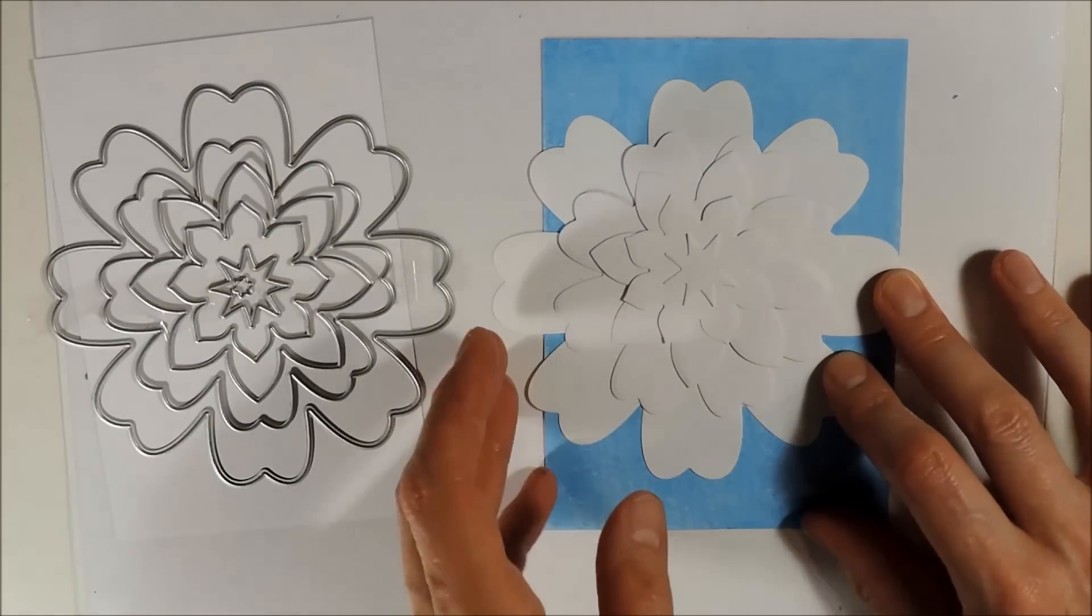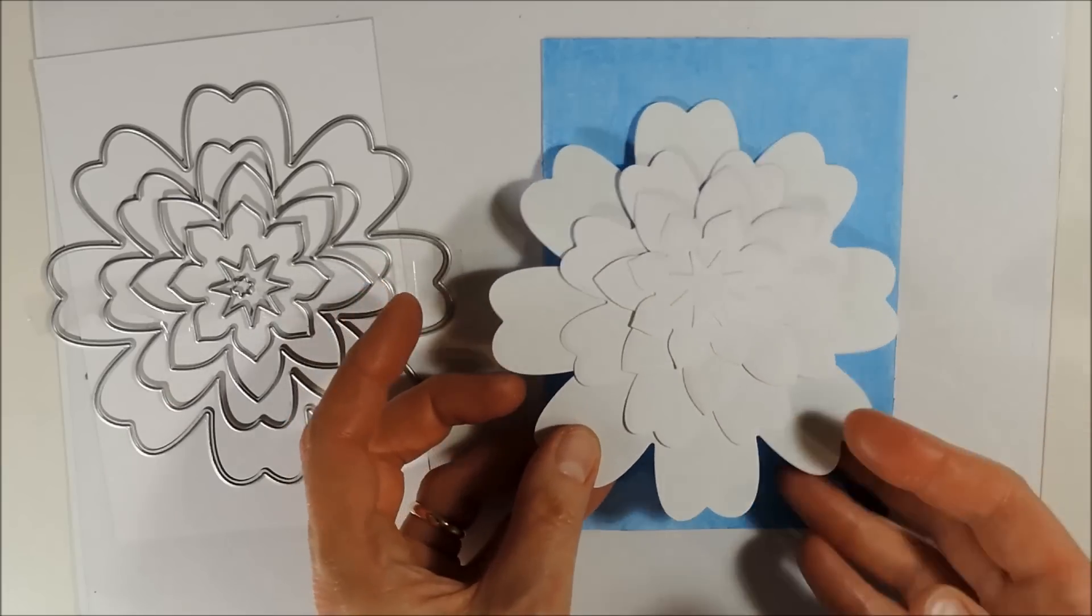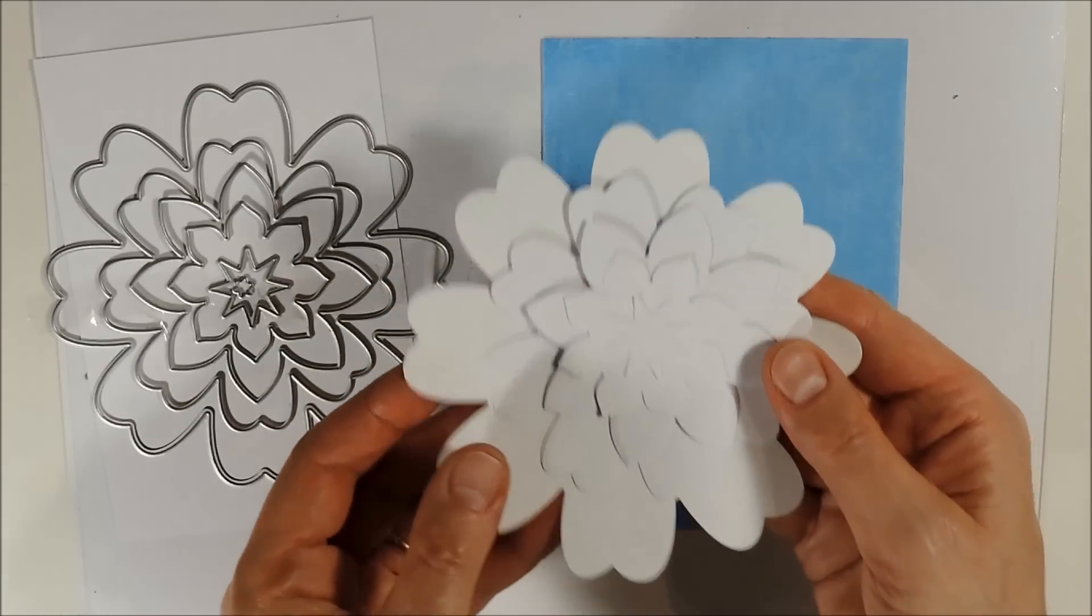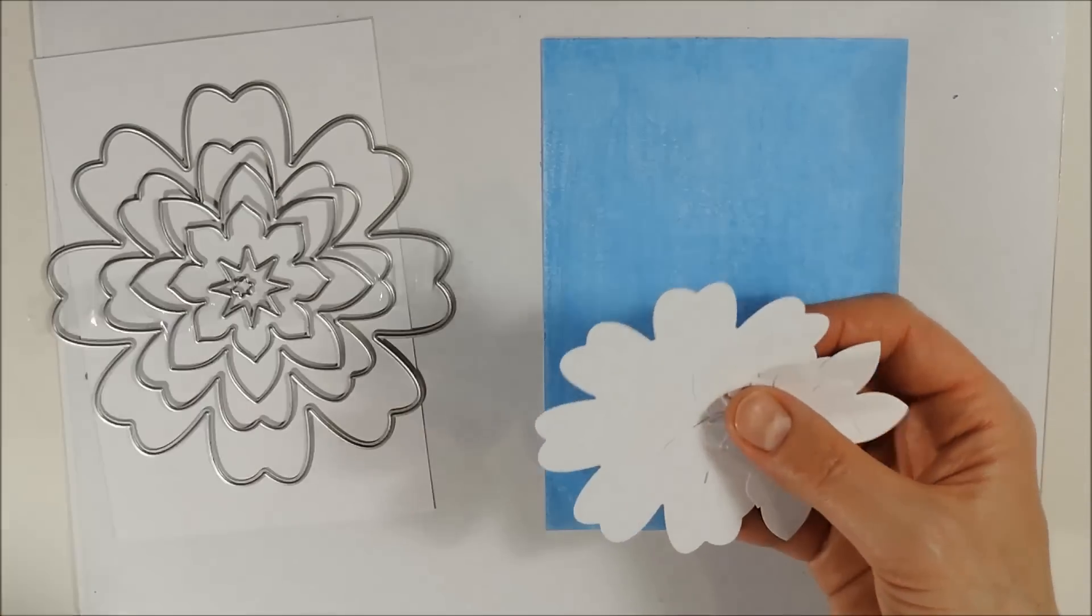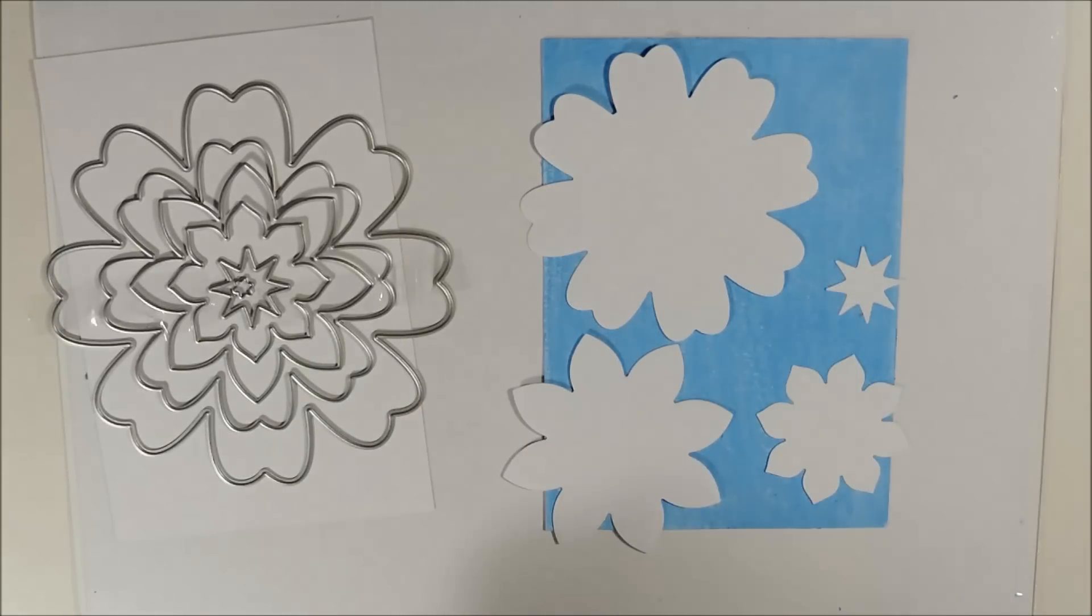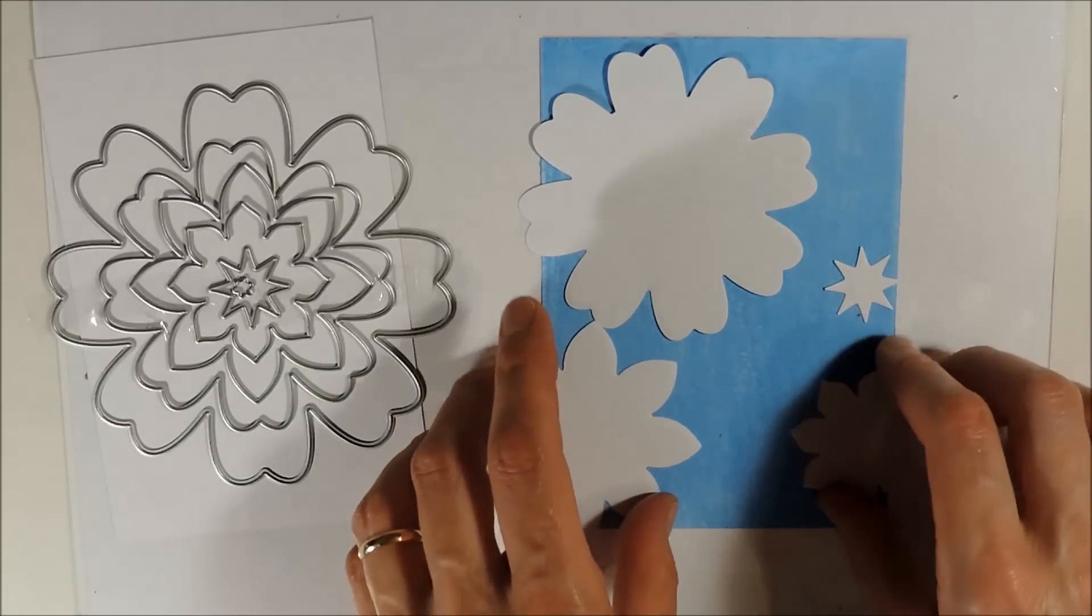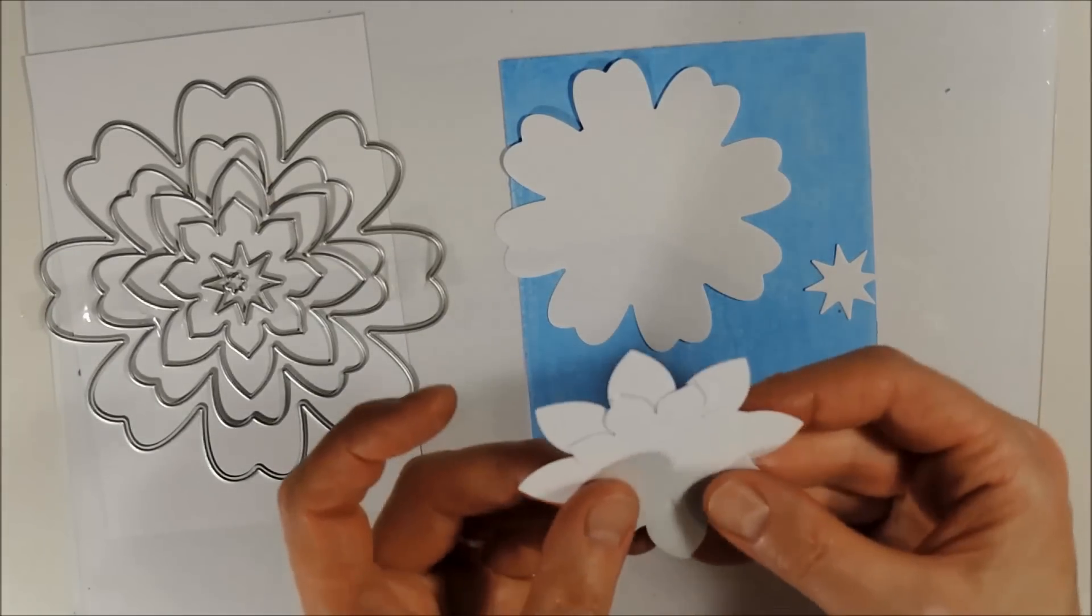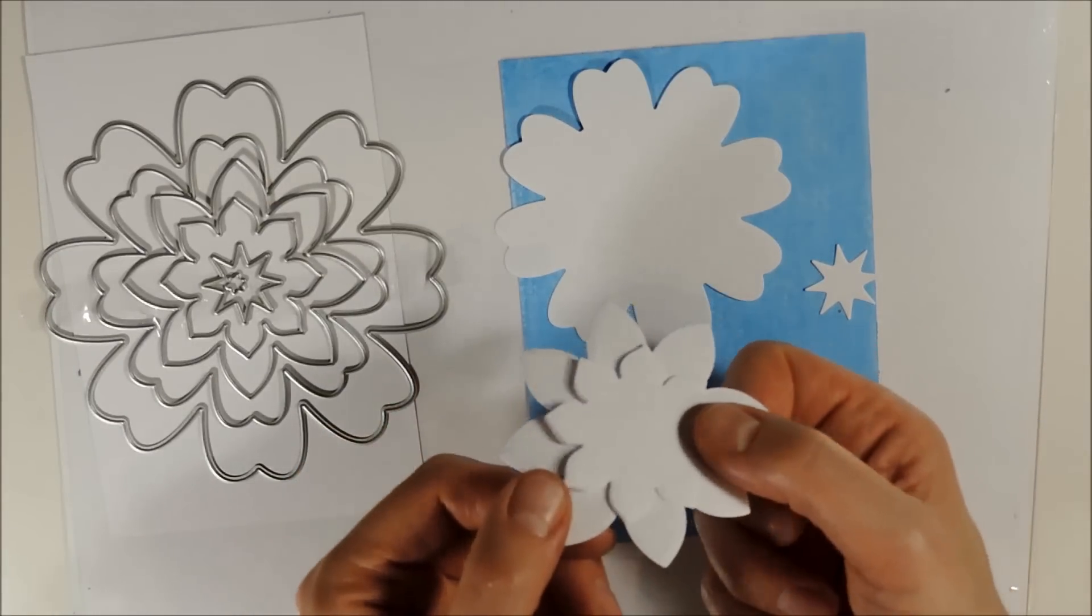Now I show you once more every cut out separately. And I think this middle sized two dies would make some beautiful flowers.